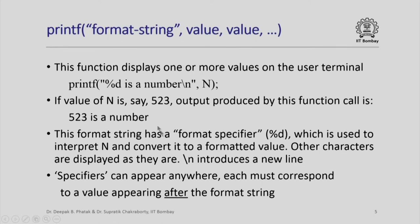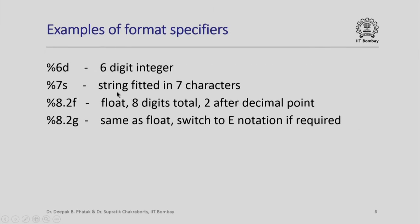The format specifiers can appear anywhere in the format string, but each must correspond to a value appearing after the format string. Some examples of format specifiers: %6d means a 6-digit integer; %7s means a string fitted in 7 characters; %8.2f means a floating point with a total of 8 digits and 2 digits after the decimal point; %8.2g is the same but uses e-notation if the number is very large or very small.